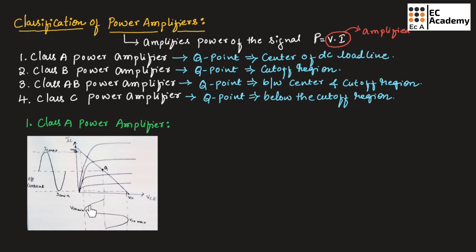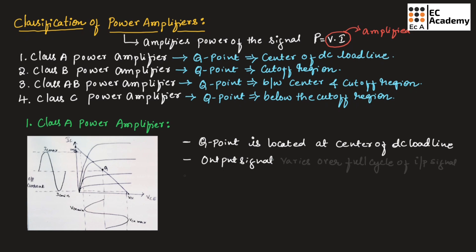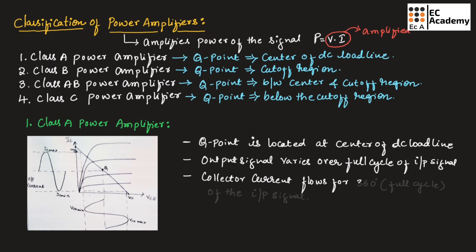This is the output current and this is the output voltage of the class A power amplifier. As you can observe from this diagram, from the center of the DC load line where the Q point is present, we have the maximum current which is IC maximum and minimum current which is IC minimum. At the output voltage, we have the minimum voltage VCE minimum and maximum voltage VCE maximum. In a class A power amplifier, the output signal varies over the full cycle of the input signal, and the collector current flows for 360 degrees, which is the full cycle of the input signal.